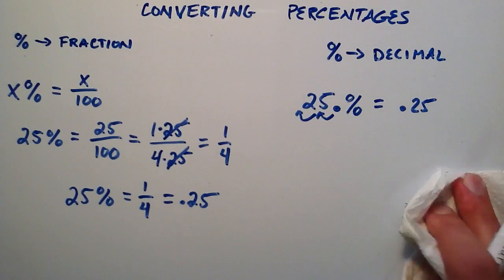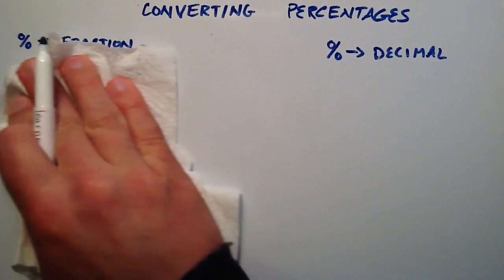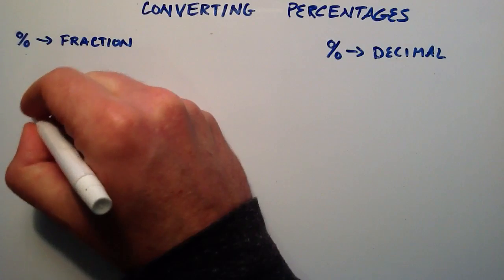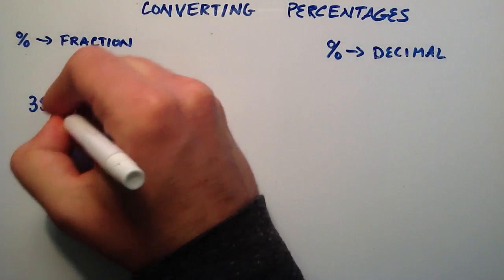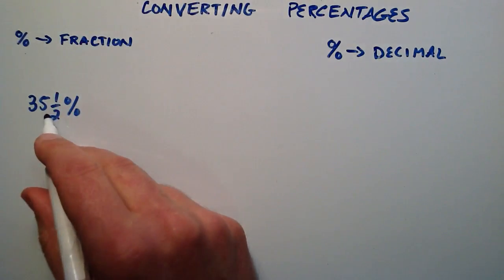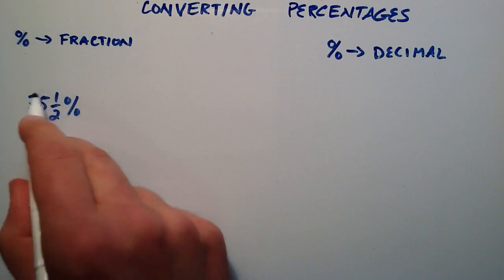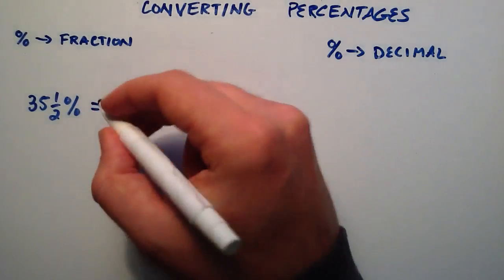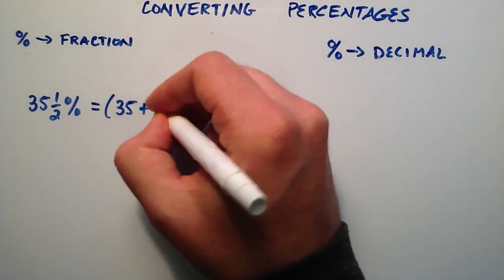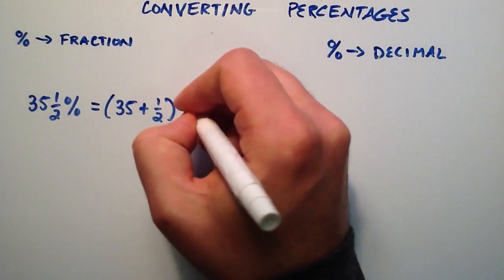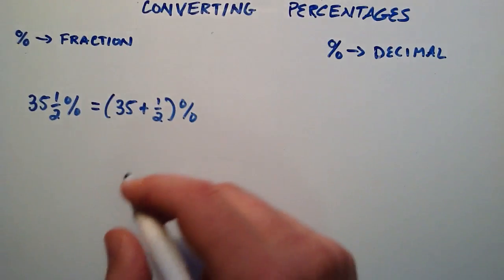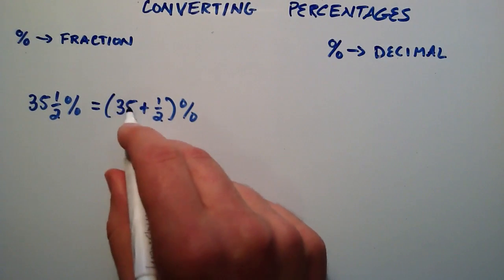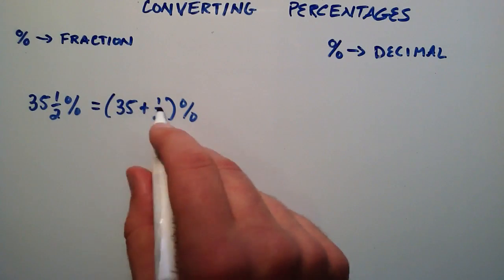So let's do a little bit more challenging example here. Let's say that we have 35 and 1 half percent. Well, the first thing we want to do to convert this to a fraction is we want to put the 35 and 1 half into a different form. So we can rewrite this as 35 plus 1 half, and then the percent of all that. And now what we want to do is we want to put this as some number over 2 so that we can add these two together.